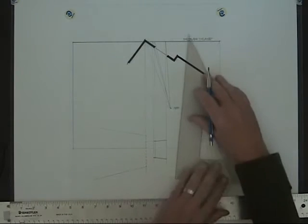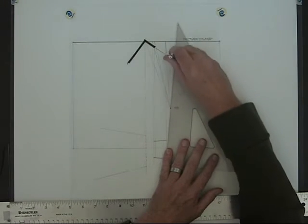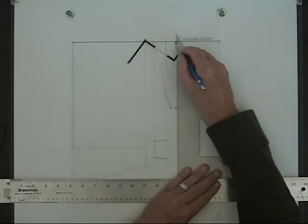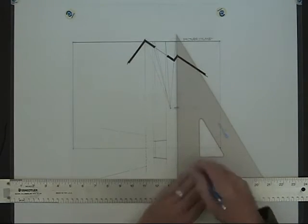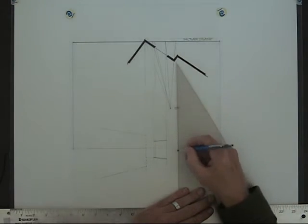Now the dogleg. This little front corner right here from the station point projected to the picture plane. From the picture plane bring the lines straight down.